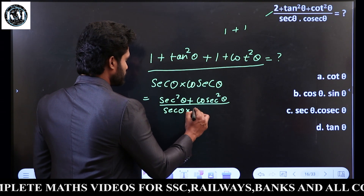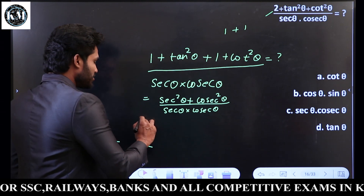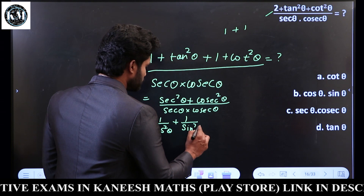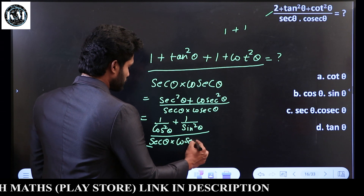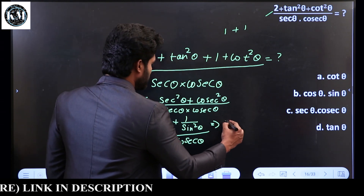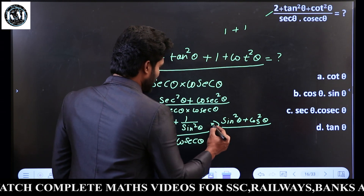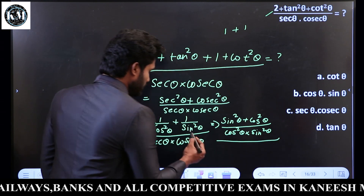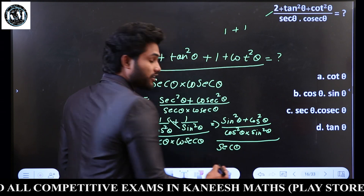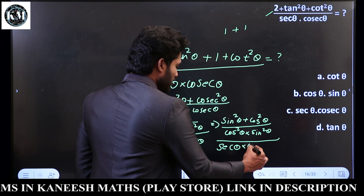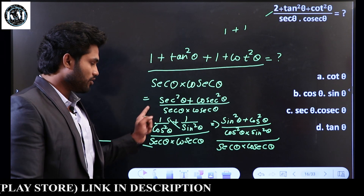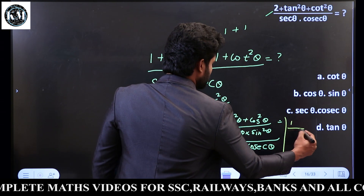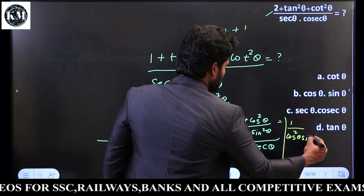I will write sec square theta — this is inverse. Sin is inverse. If you cross this, the sin splits up. The key step here is LCM. LCM is the multiple. So we end up with 1 by cos square theta sin square theta.